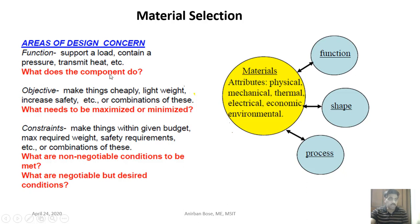What does the component do? The objective might be to make things cheaply, lightweight, or to increase safety — or a combination of these. In automobile or aircraft applications, reducing weight reduces fuel cost. Some objectives can be sacrificed depending on the application; others cannot. These are the important decision-making factors in selecting materials.